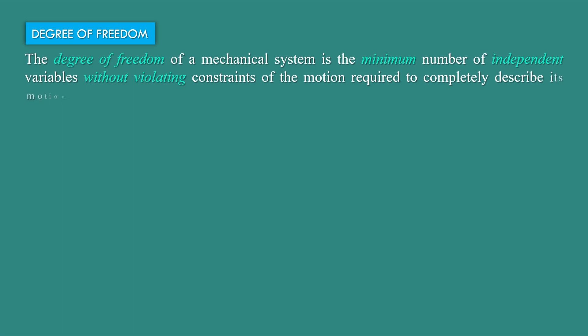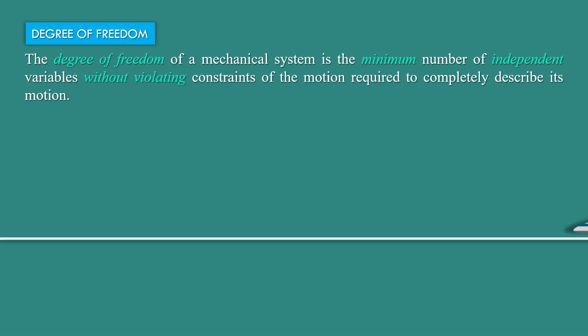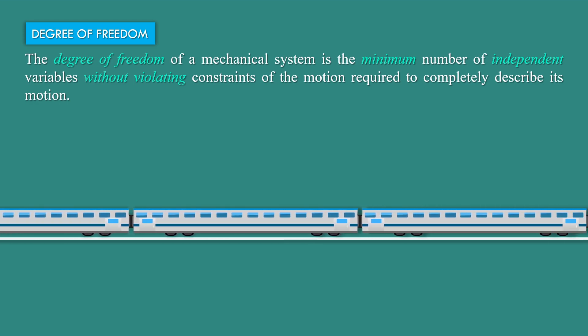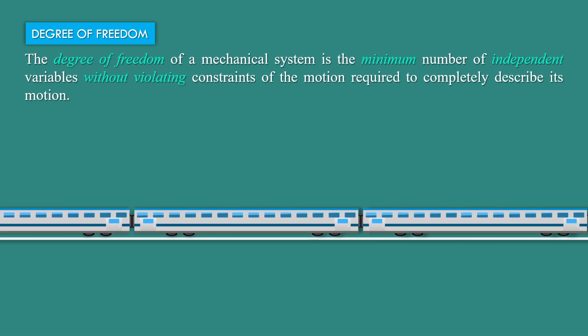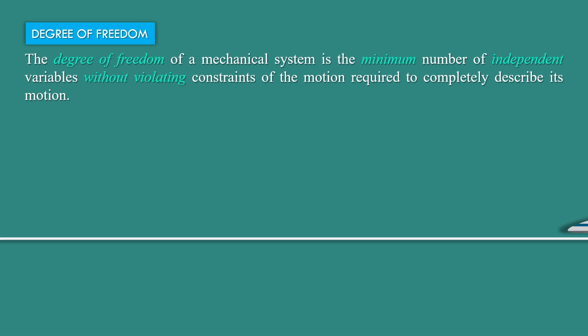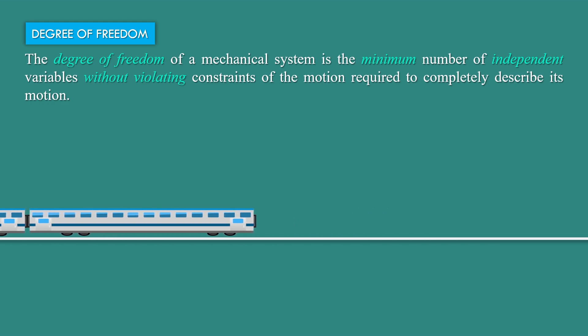Now, Degree of Freedom. The degree of freedom of a mechanical system is the minimum number of independent variables, without violating constraints of the motion, required to completely describe its motion. If we consider a moving train, then the degree of freedom of this moving train is one, as it moves only along the X-axis. It cannot move along the Y-axis and also cannot move along the Z-axis, since the train moves along its track.